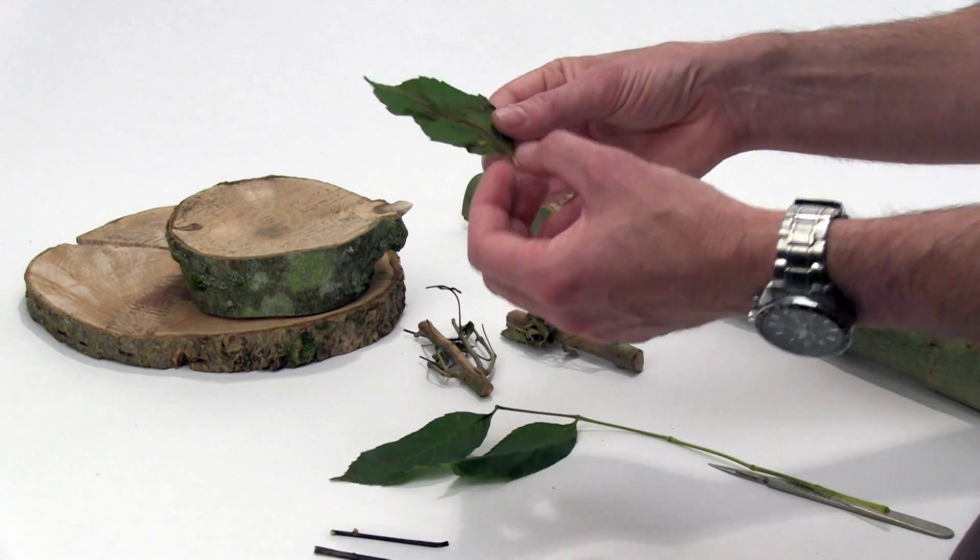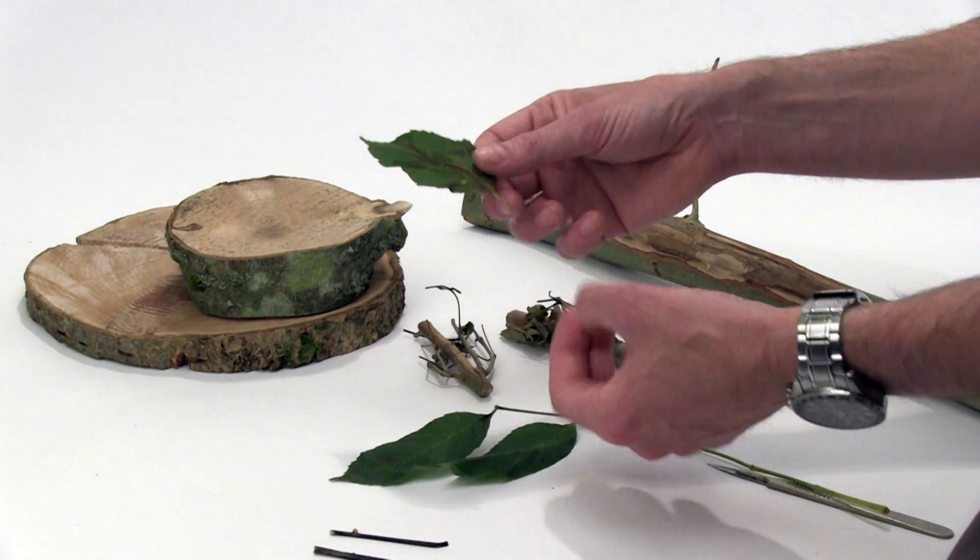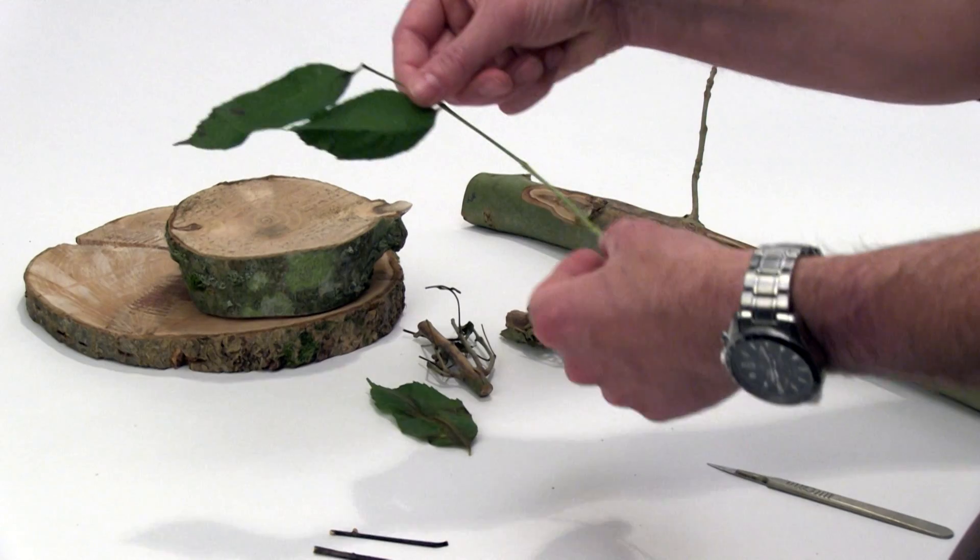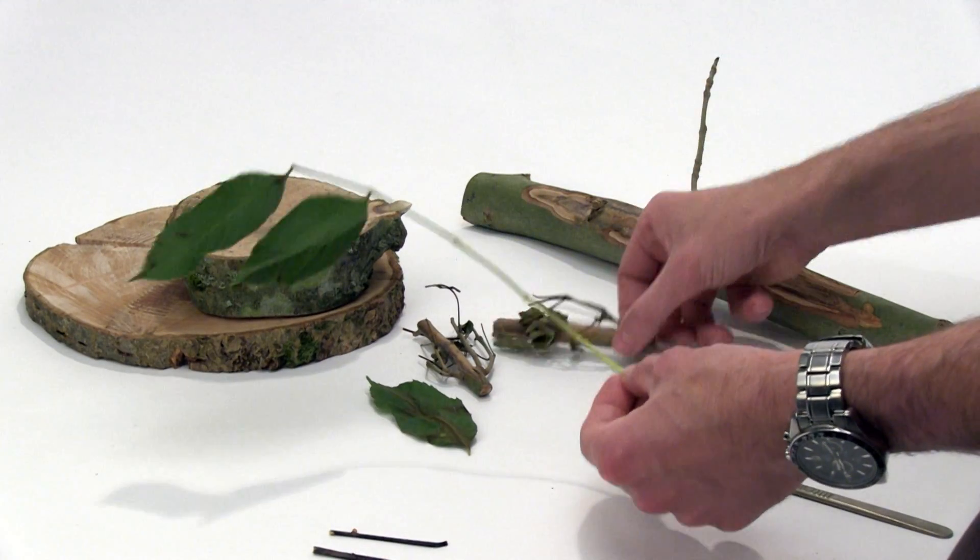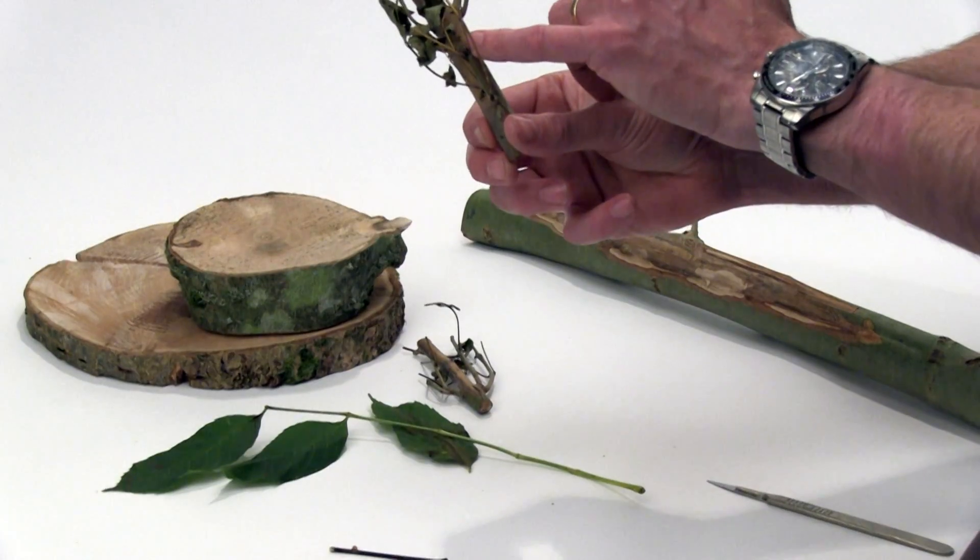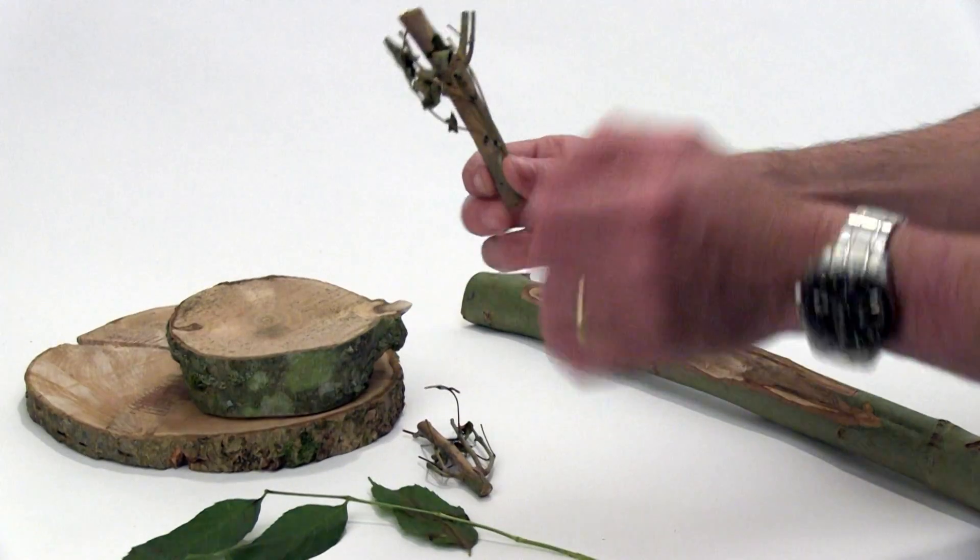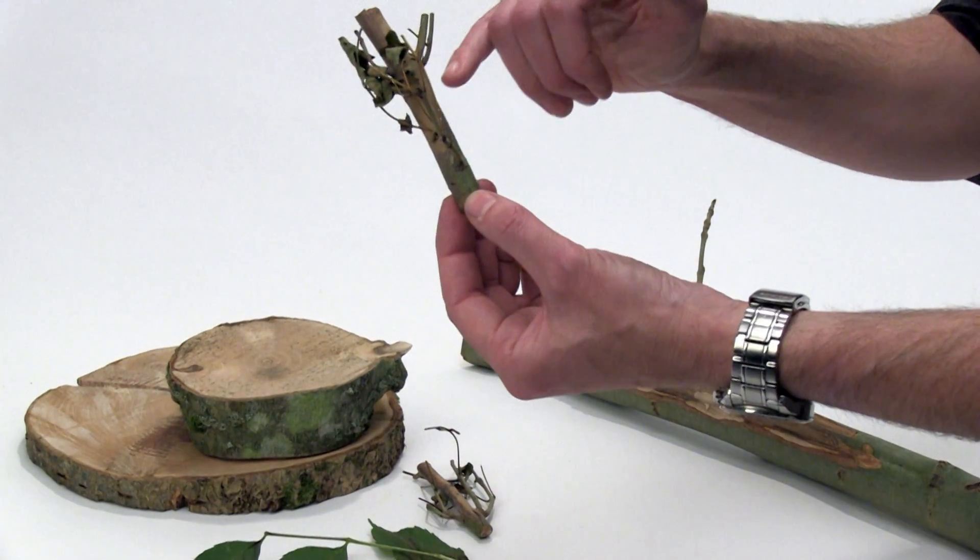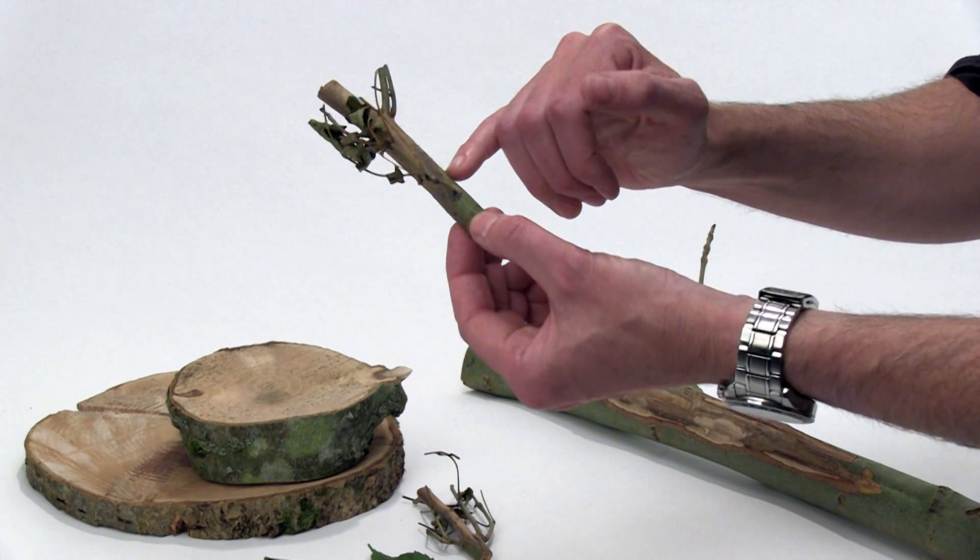And then that can actually extend into the rachis itself and then down the rachis and into the actual main stem, whether that's a small stem or a large stem of a tree, of the actual plant, the sapling, the tree itself.